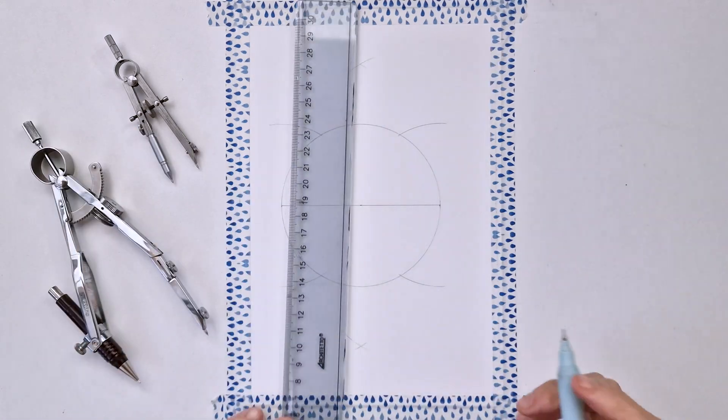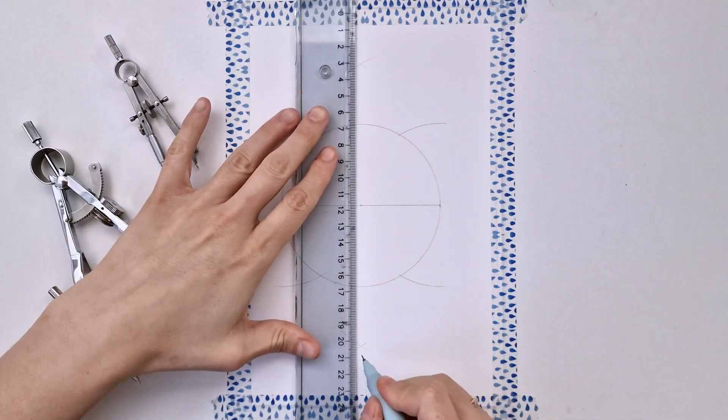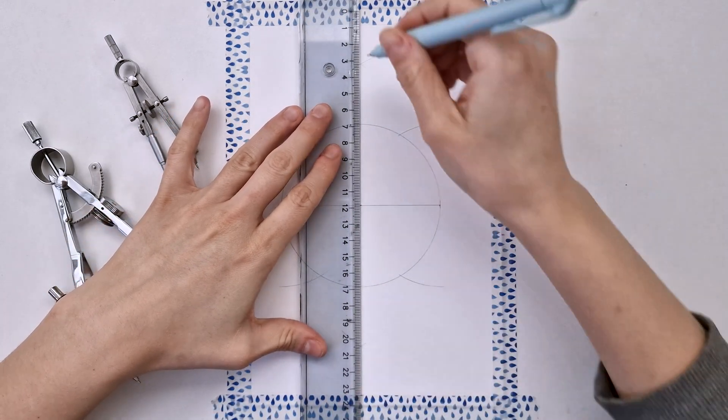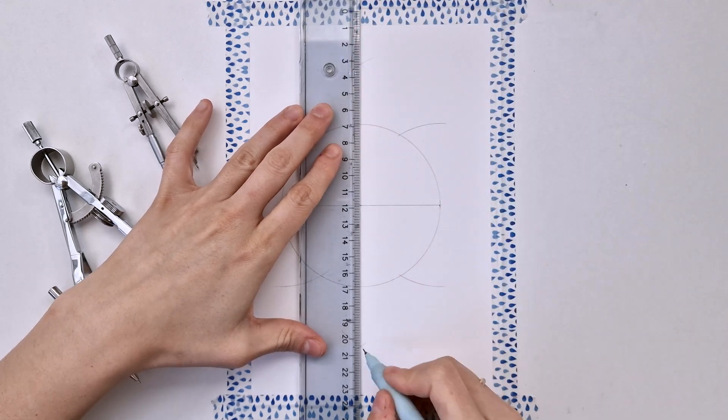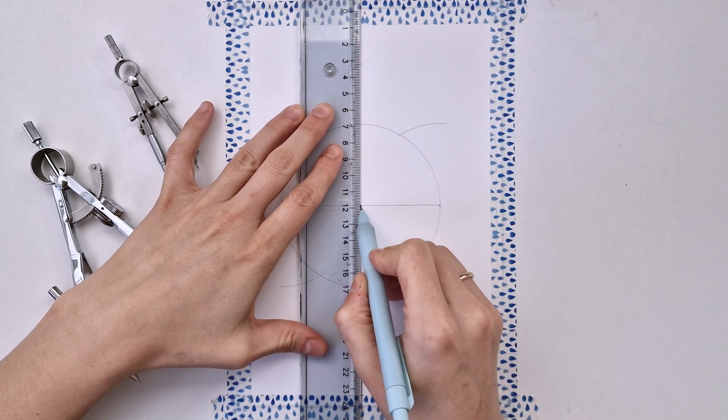When I align my ruler to those intersections, I can draw my vertical line, making sure it passes through the center of the circle as well.